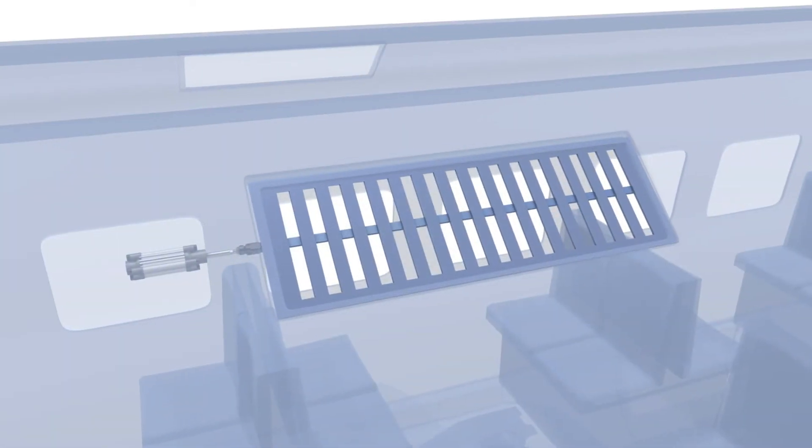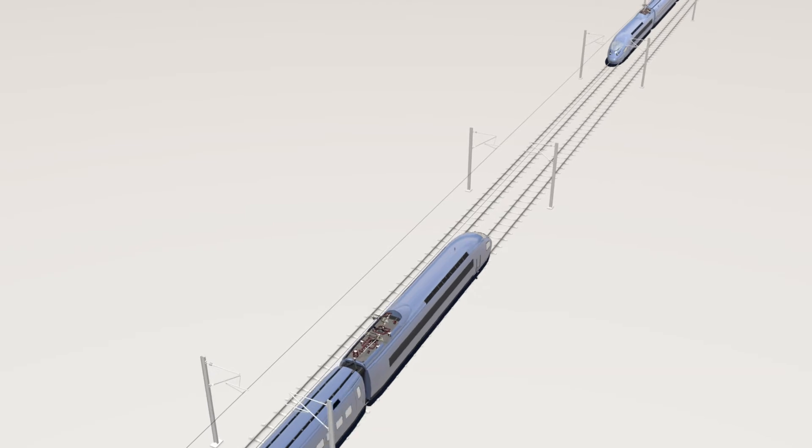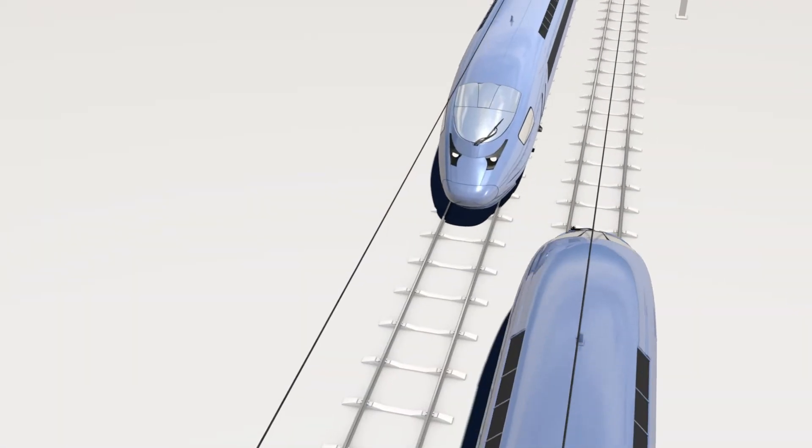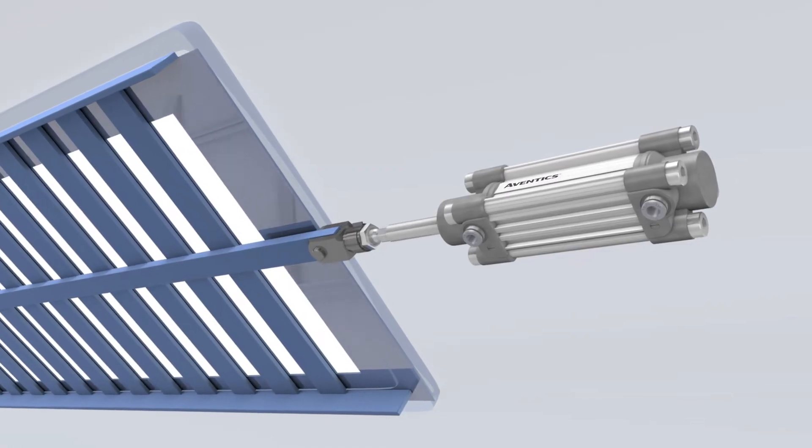Fresh air intake of high-speed trains must be closed within fractions of seconds to limit a pressure wave entering the passenger cabins when trains enter or exit tunnels and in case of oncoming traffic.